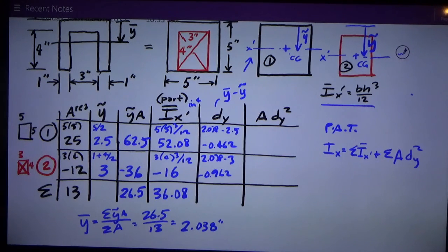Then to get A dy squared, I square that column, multiply it by the area, and I get 5.33. 0.462 squared times 25, and this one works out to be, I'm multiplying 0.962 squared times negative 12, so I get negative 11.09. I add up the A dy squared column and I get negative 5.77.